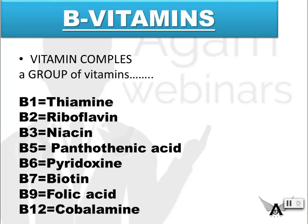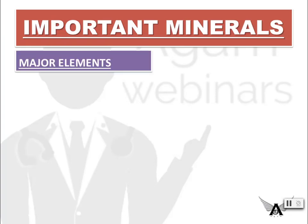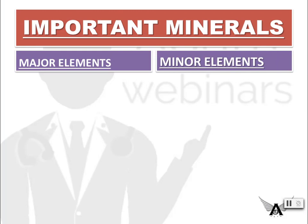Vitamin B complexes comprise a group of vitamins: vitamin B1 also known as thiamine, B2 riboflavin, B3 niacin, B5 pantothenic acid, B6 pyridoxine, B7 biotin, B9 folic acid, and lastly B12 cobalamin.